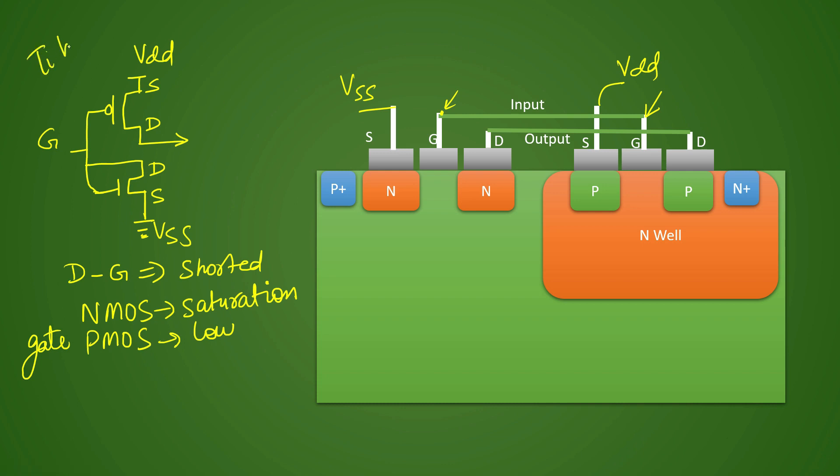This is why it is called a tie high cell — it will always give you a high output.